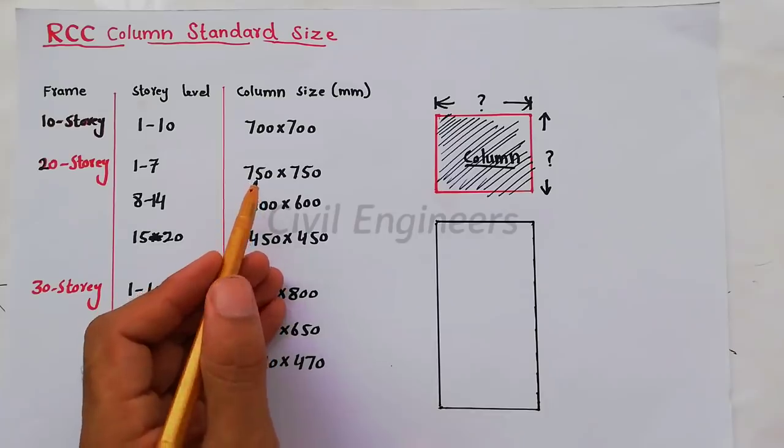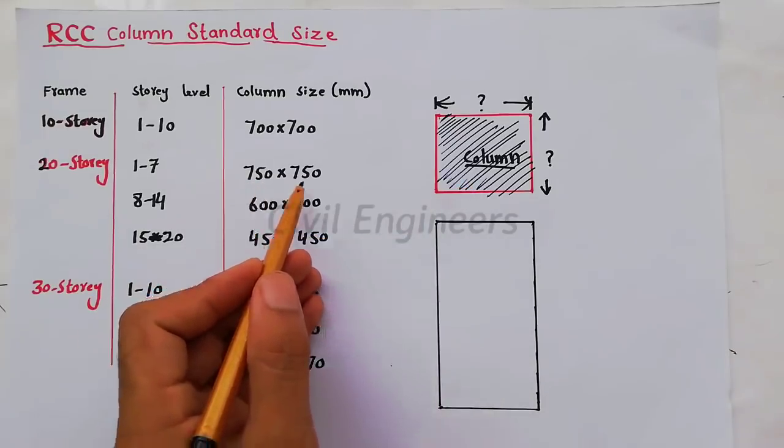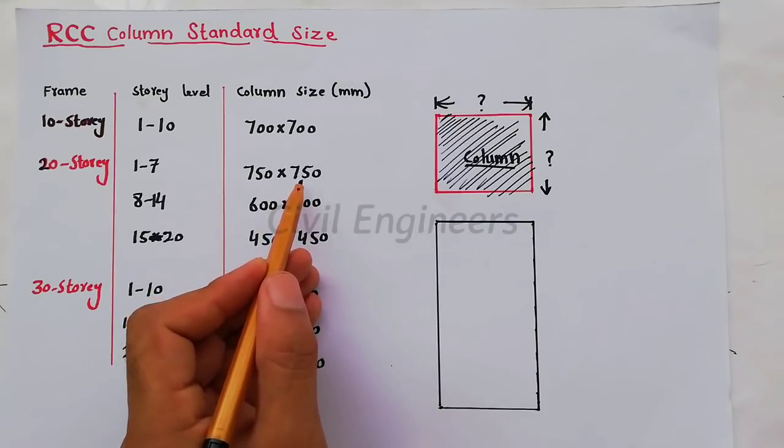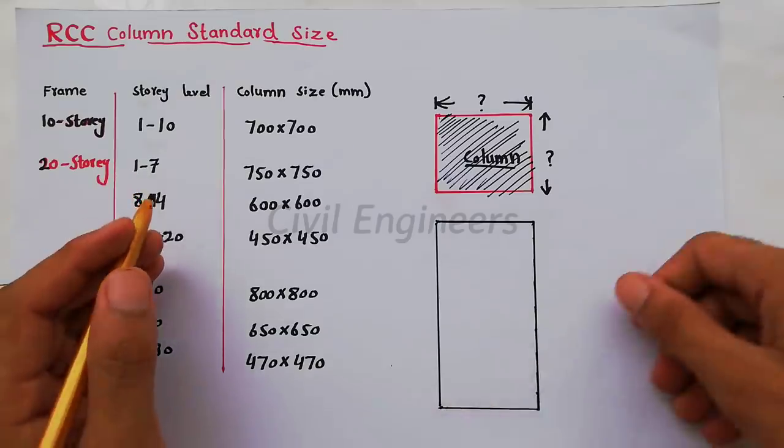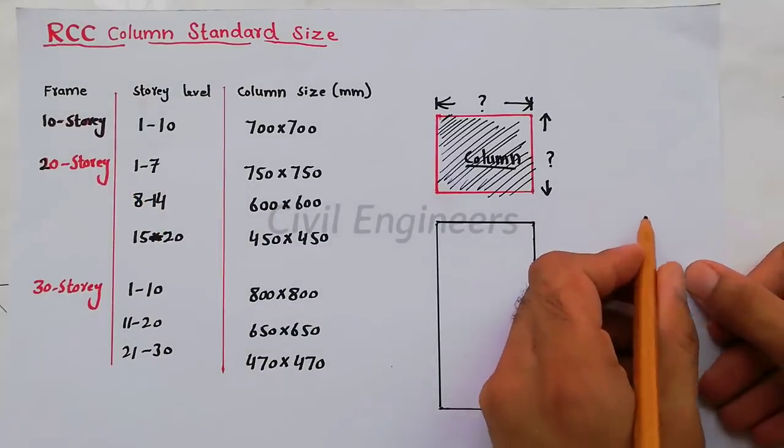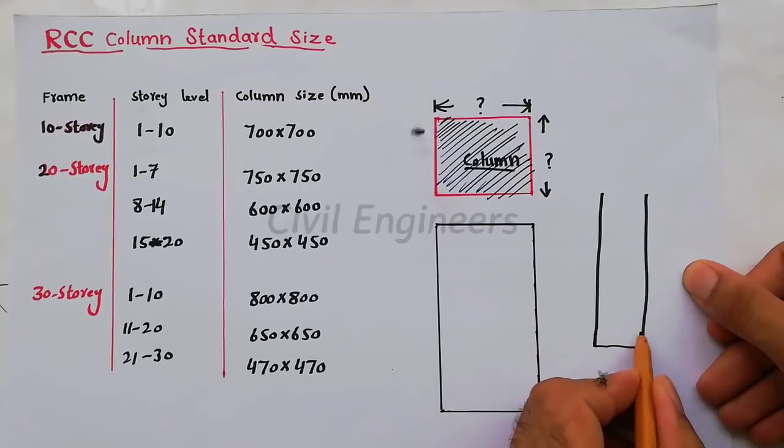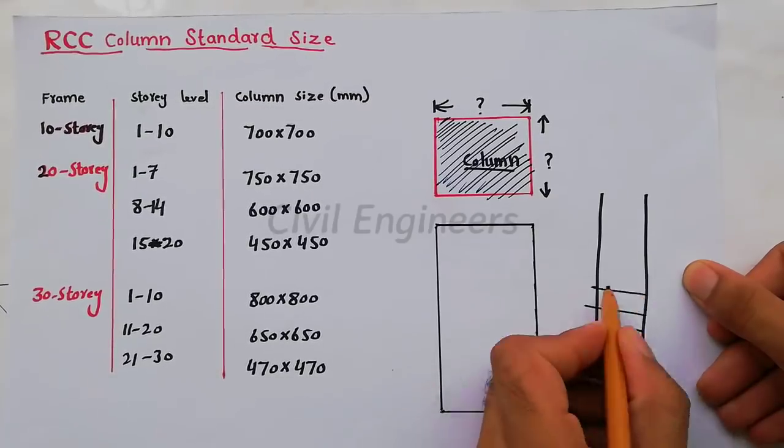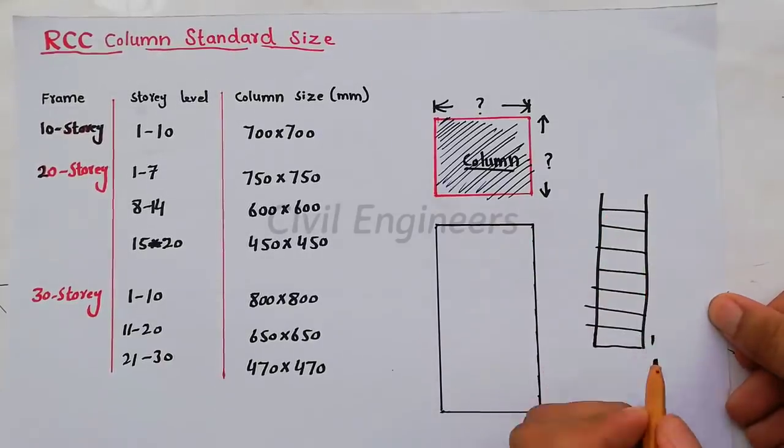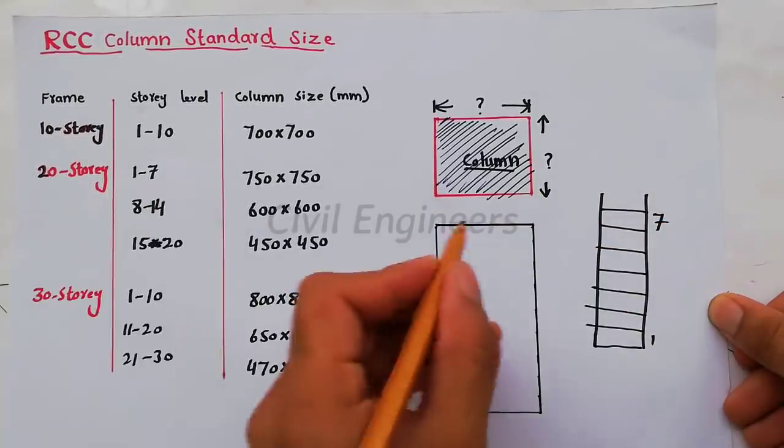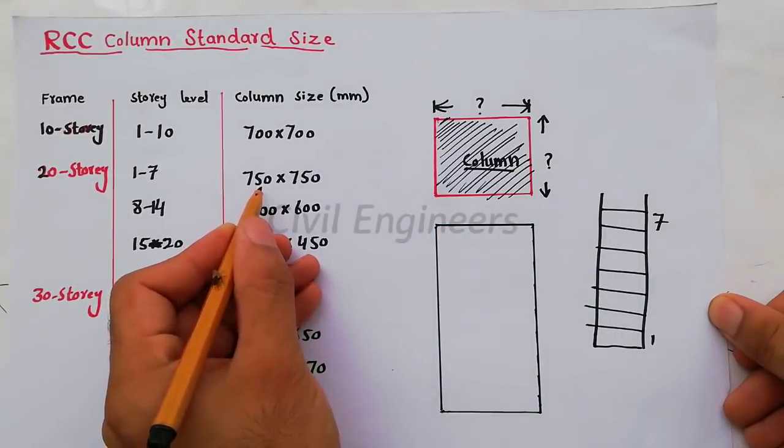For a 20-story building, from 1 story level to 7, we have to take the size of RCC column as 750 millimeter by 750 millimeter. From 1 to 7, suppose this is our building - one, two, three, four, five, six, seven. From 1 to 7, the size of the column should be 750mm by 750mm.